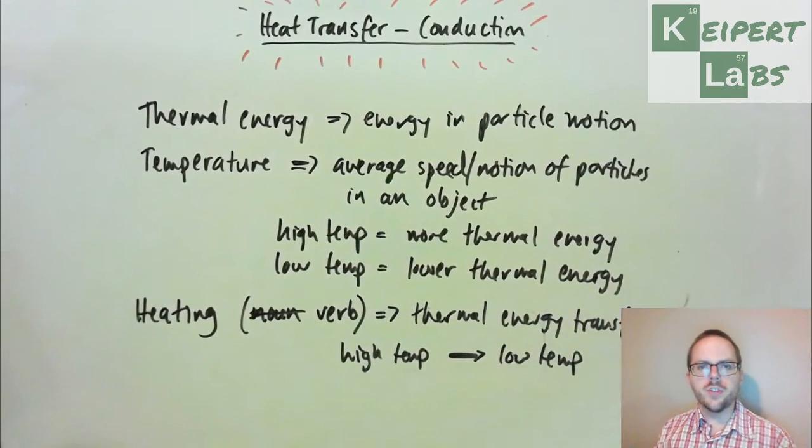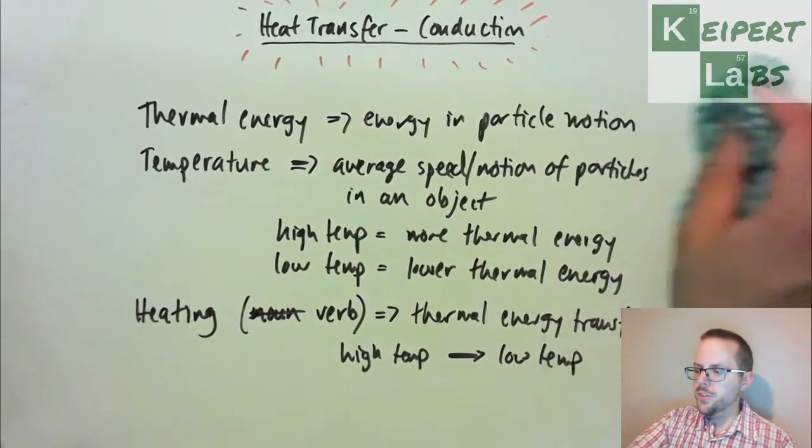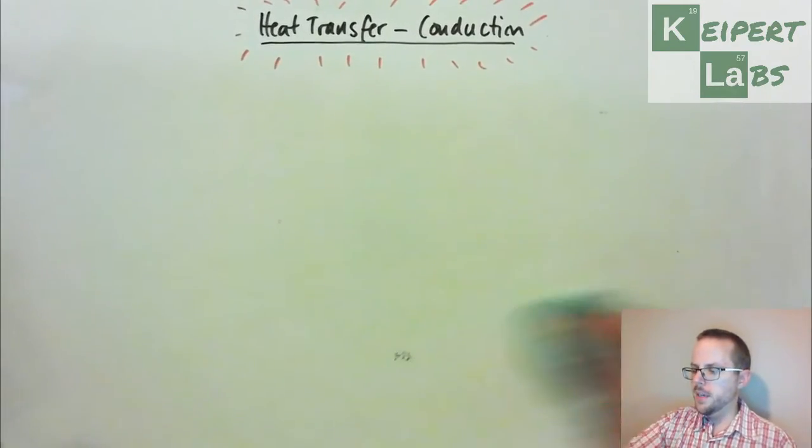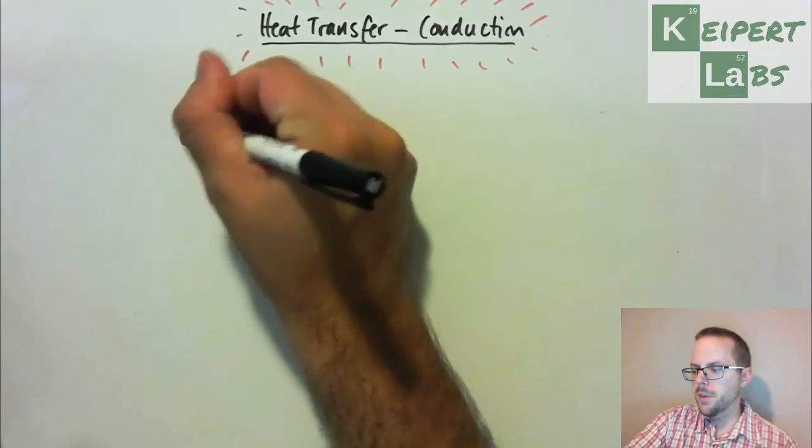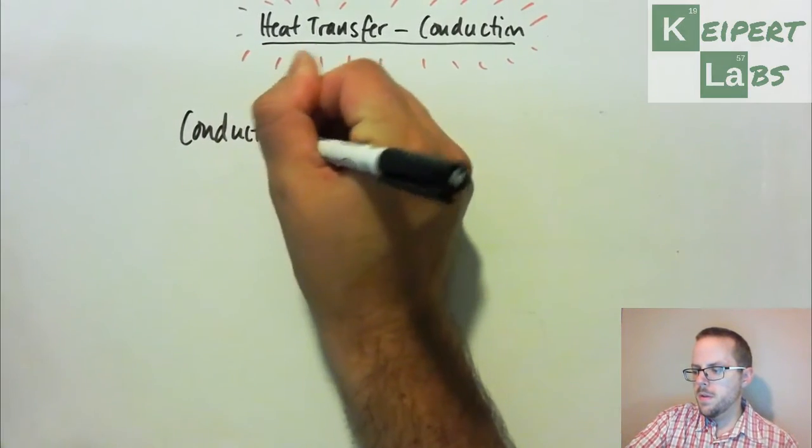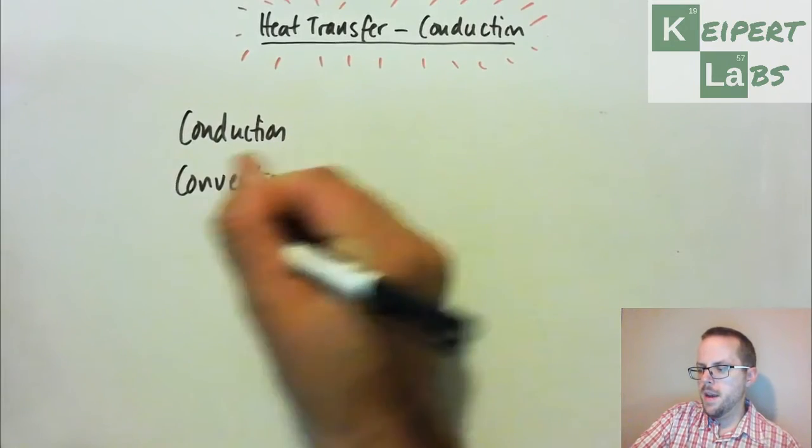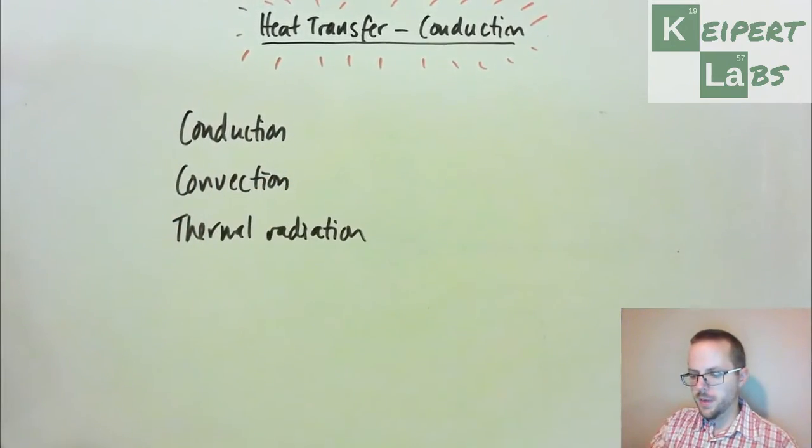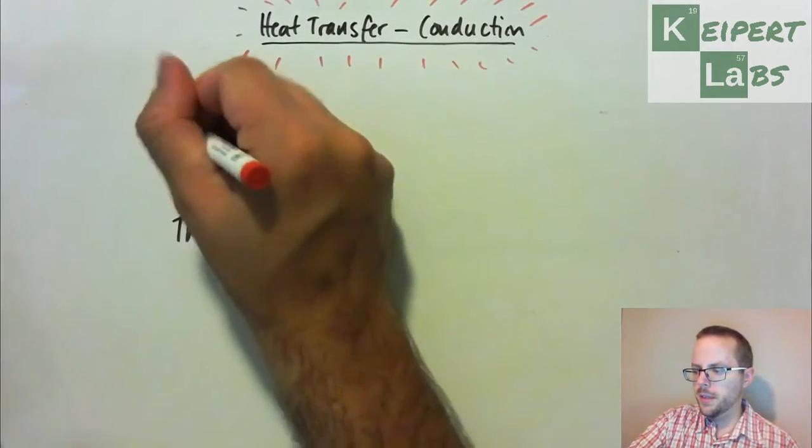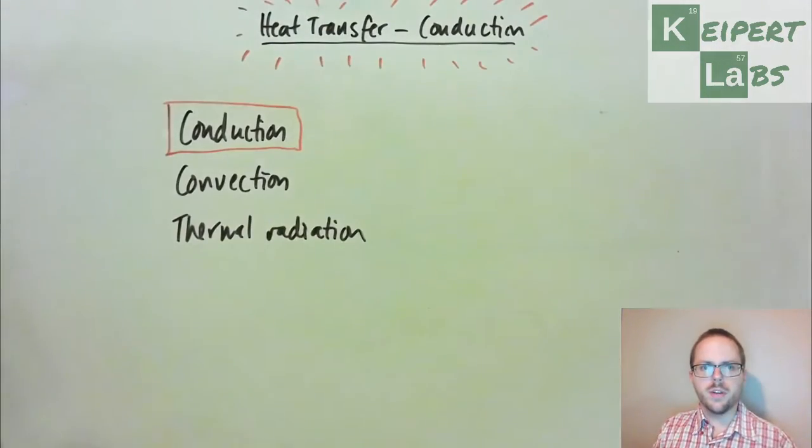Okay, so that's kind of the direction, that's roughly how it works. But so what we want to now talk about is this idea that there's three main mechanisms by which this works: conduction, convection, and thermal radiation. Okay, so in this video, we're going to very quickly discuss the first one, conduction.